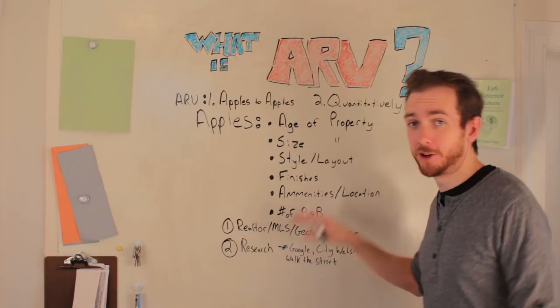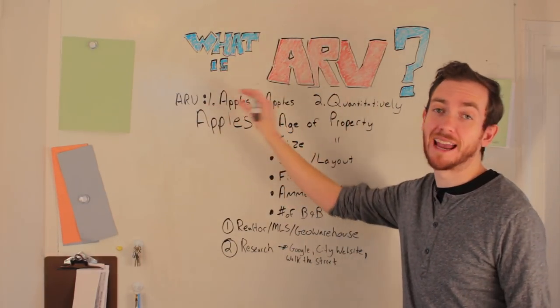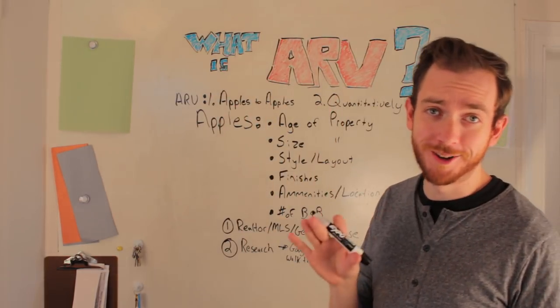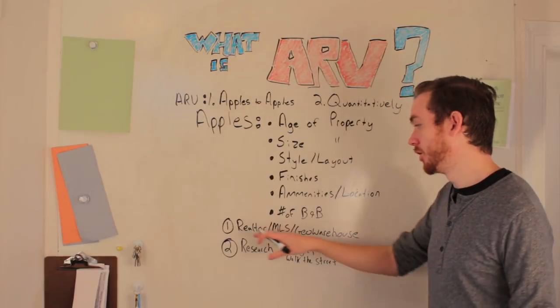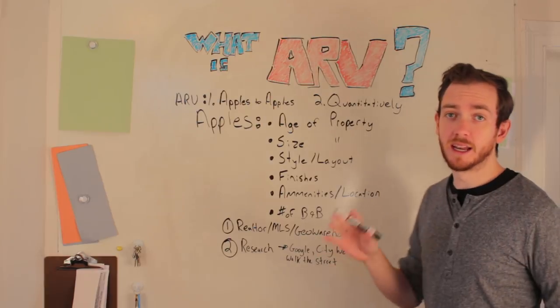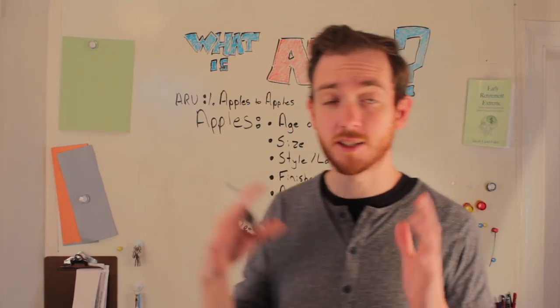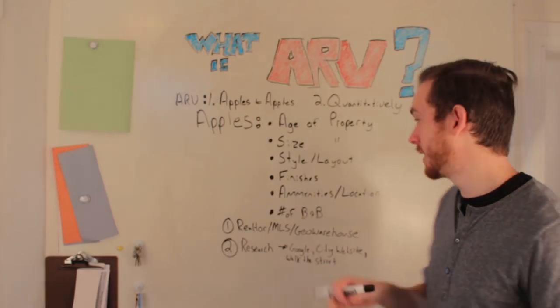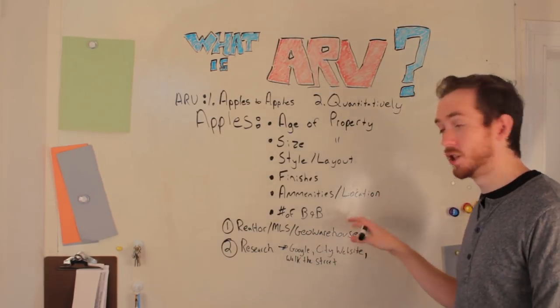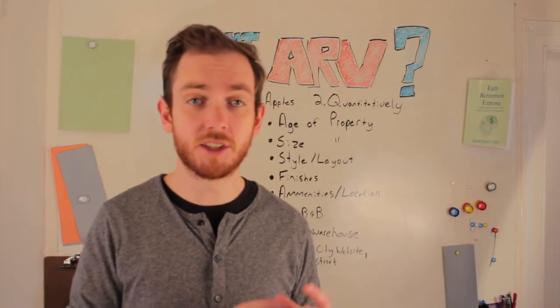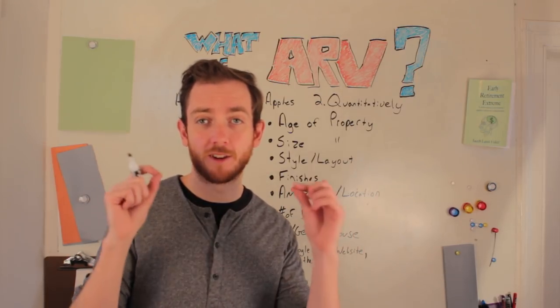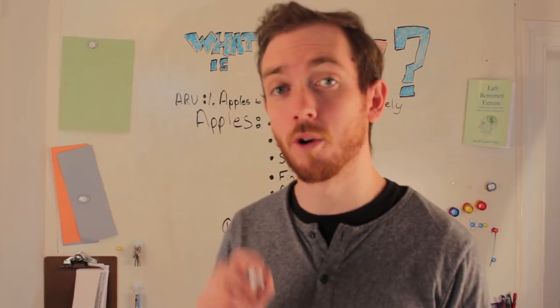You now have a list of factors needed to create your apples-to-apples comparison to determine ARV. But where do you get that information? The two main sources are your realtor via the MLS or Geo Warehouse. Your realtor has access to MLS or realtor.ca, which has exact square footage, number of bedrooms, bathrooms, age of mechanicals, and more. Additionally, your realtor has access to Geo Warehouse, which in Canada gives you access to all sales in an area — you can even map out specific neighborhoods to find out what properties sold for.